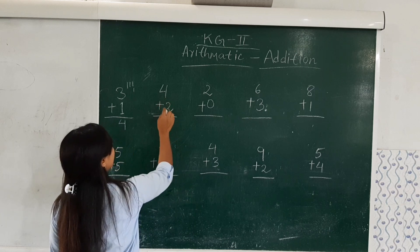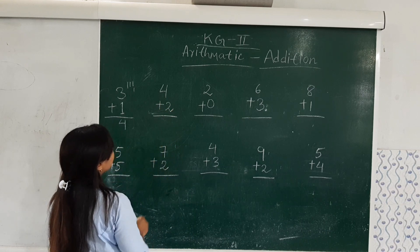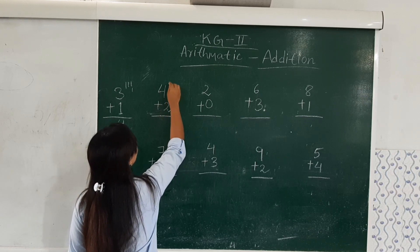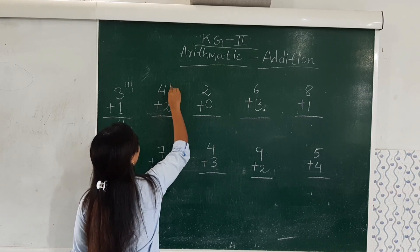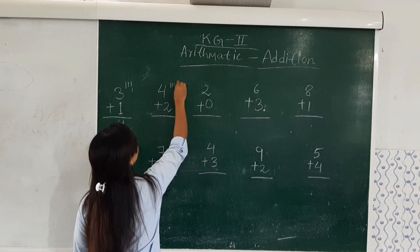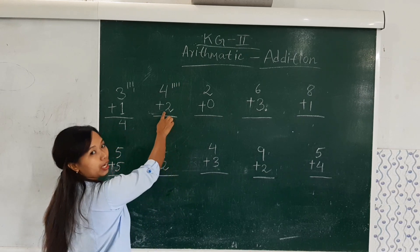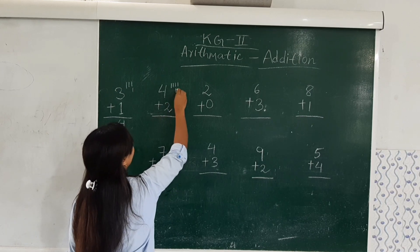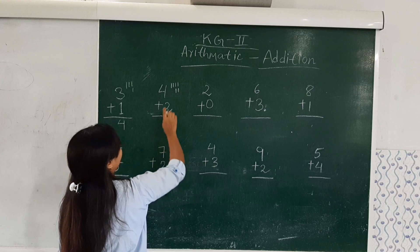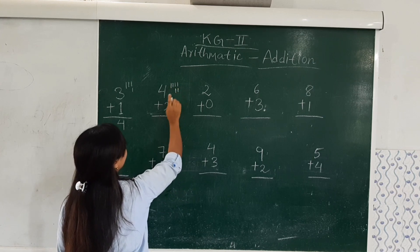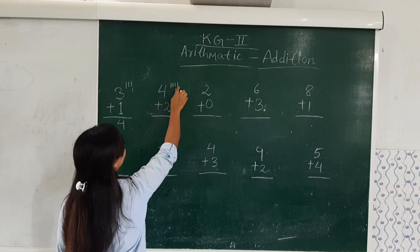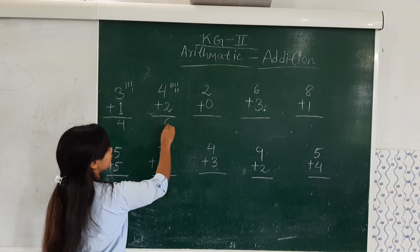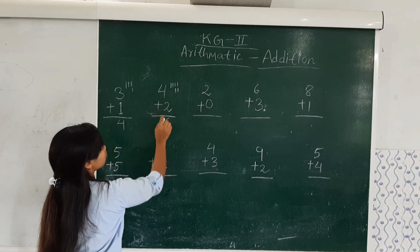Now the second one: 4 plus 2. We will find out — we have 4 here, so we mark 4 times: 1, 2, 3, 4. Here we have 2, so we mark 2 times: 1, 2. Now let's count all together: 1, 2, 3, 4, 5, 6. So the result is 6. 4 plus 2 is 6.